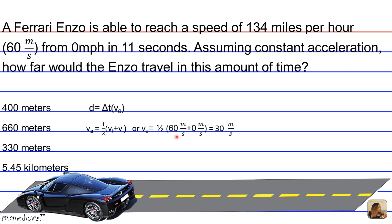We can substitute 60 meters per second, because we're told that's the speed it reaches at the end of the 11 second time frame, and 0 meters per second is our initial velocity. So when we add the two and multiply them by one half, we get 30 meters per second as our average velocity.